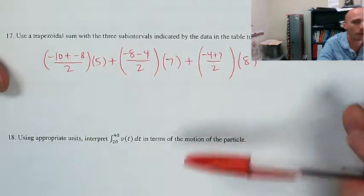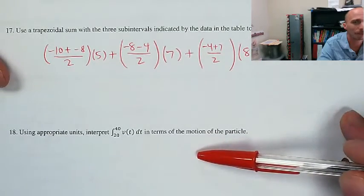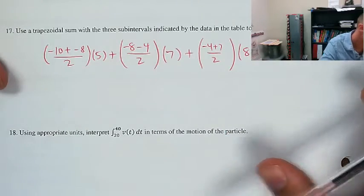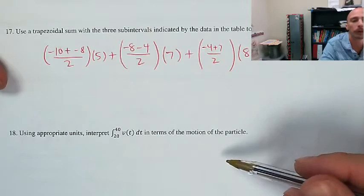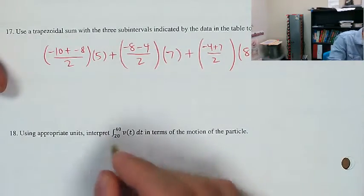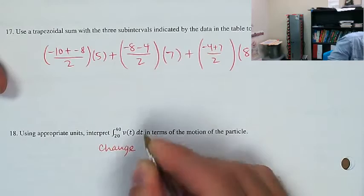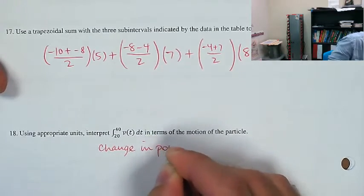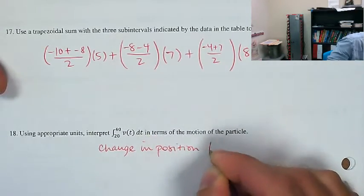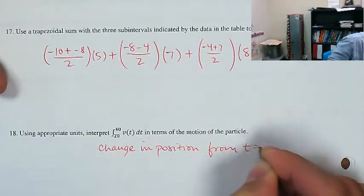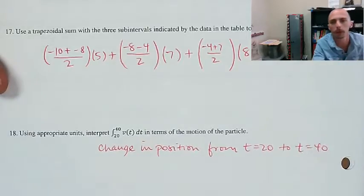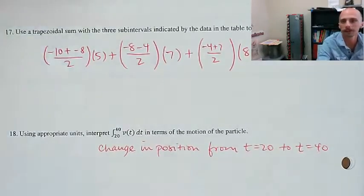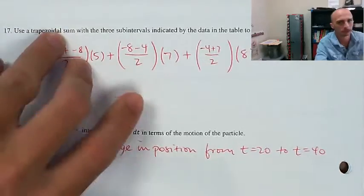I'm going to say you don't know the interpretation yet. Just a preview: the integral of v represents change in position from t = 20 to t = 40. But you're not supposed to know that yet — that's what we'll find out next time.